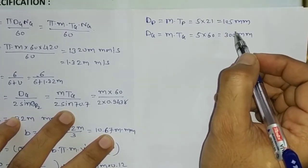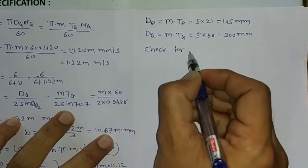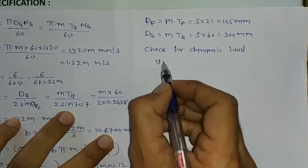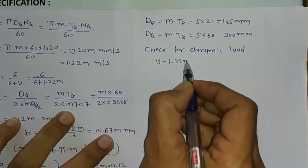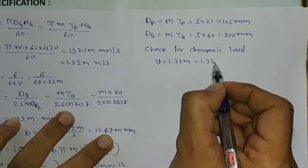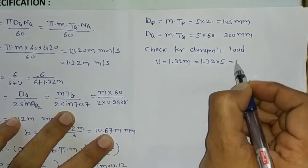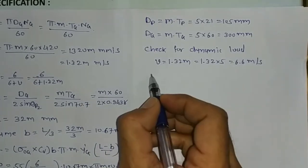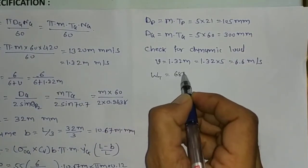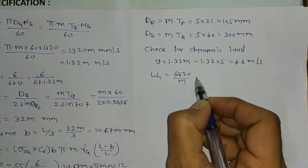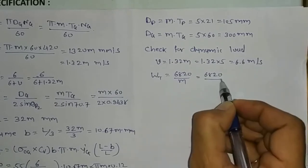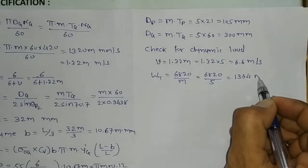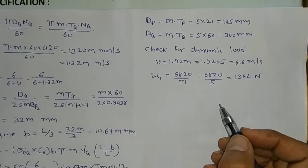Now let us check for dynamic load. The velocity V equals 1.32m equals 1.32 into 5 equals 6.6 meter per second. The tangential tooth load Wt equals 6820 divided by m equals 6820 divided by 5, giving Wt equal to 1364 Newton.